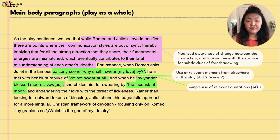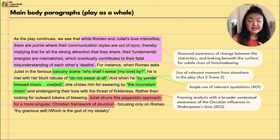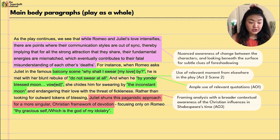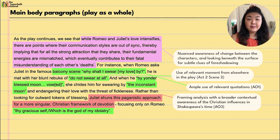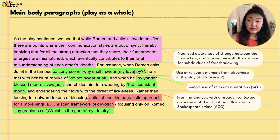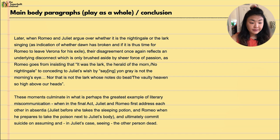Rather than looking for outward tokens of blessing, Juliet shuns this paganistic approach for a more singular Christian framework of devotion, focusing only on Romeo: 'thy gracious self, which is the god of my idolatry.' The student brings in contextual awareness here — the very much Christian moral framework Shakespeare was working under in his time — and the contrast between paganistic influences, worshipping different gods, versus the singular Christian God model. This macro religious binary feeds interestingly into the analysis.